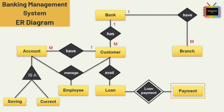One employee can manage multiple customers as well as multiple accounts at the same time, so let's add a one-to-many relationship here. Next, one customer can avail multiple loans. For one loan, we can do multiple transactions — like we can divide the payment — so I am adding a one-to-many relationship here. This is the cardinality ratio between these entities.